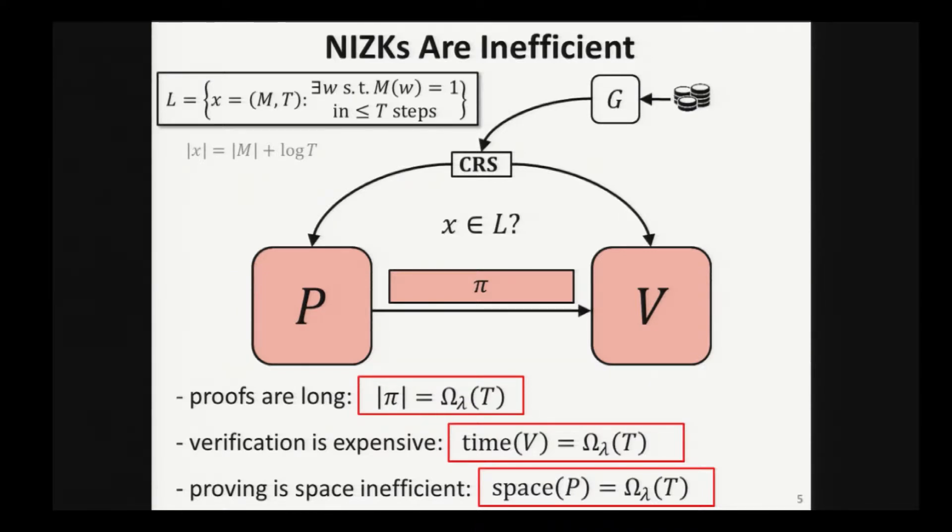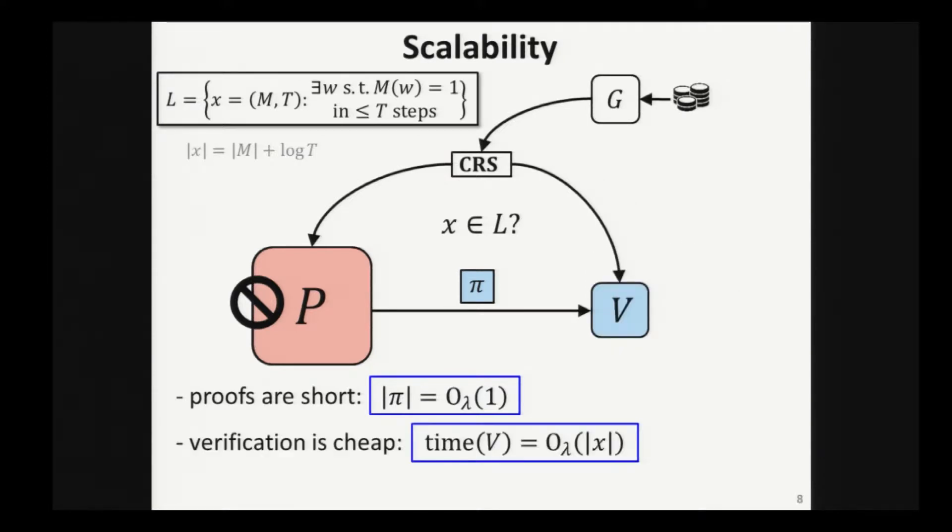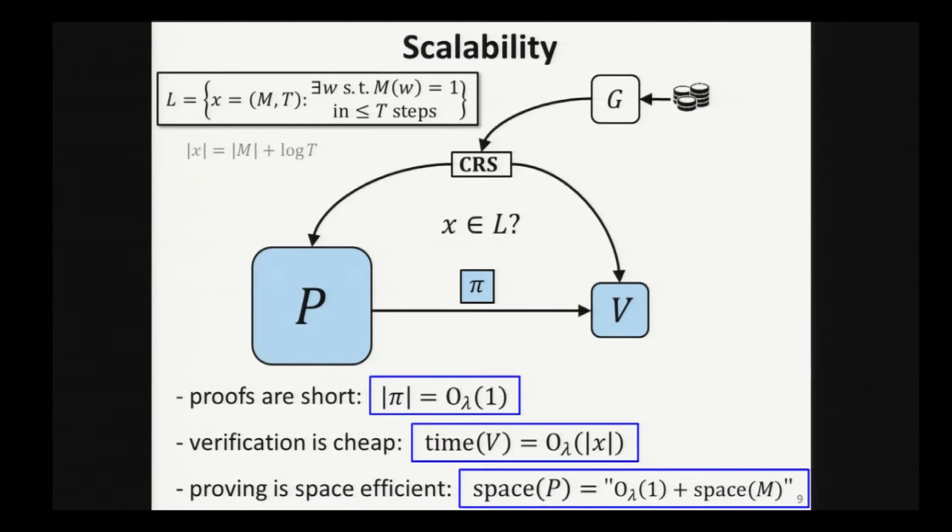Now, in scalability, we're going to explicitly require not to have any of these inefficiencies. Specifically, we're going to require that the proof only consists of a constant number of bits depending on a security parameter. We're also requiring that verification is cheap. Specifically the running time of the verifier should be linear in the size of the statement, the size of X, that's just a description of the machine, plus log T. And finally, we're going to ask that the prover is space efficient. So roughly, what I want to say here is that whatever are the space requirements of the original computation, when the prover is doing a proof, it's going to pay maybe some additive overhead in space, some constant additive overhead.